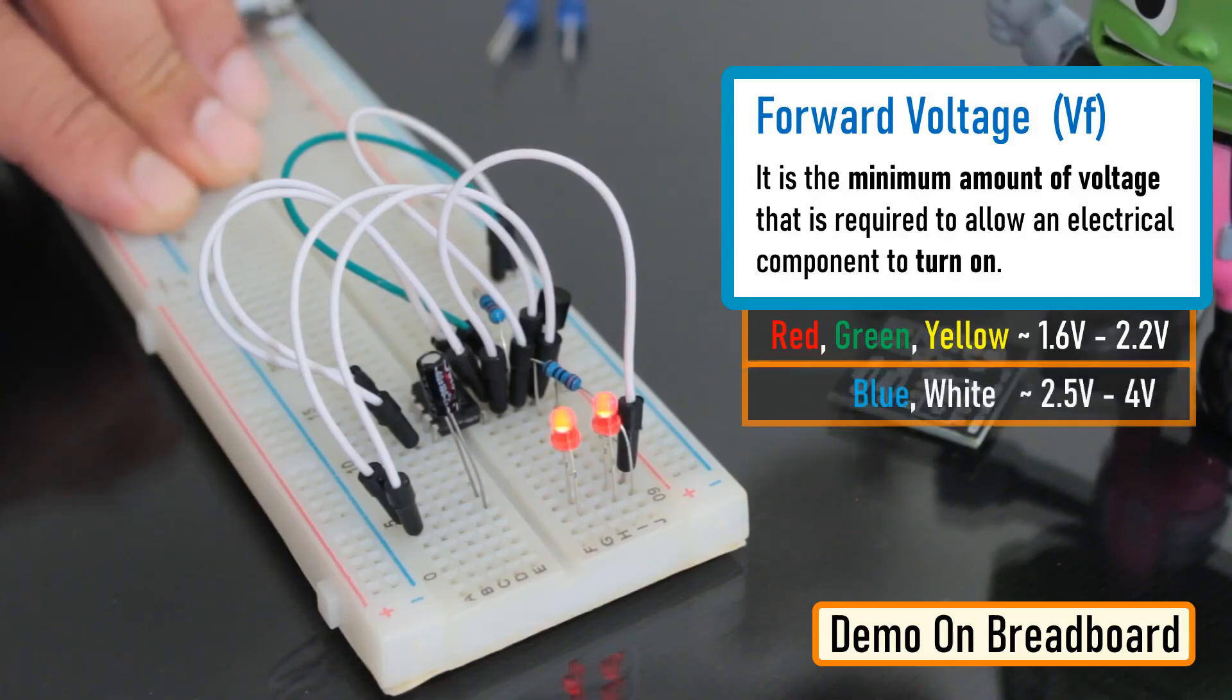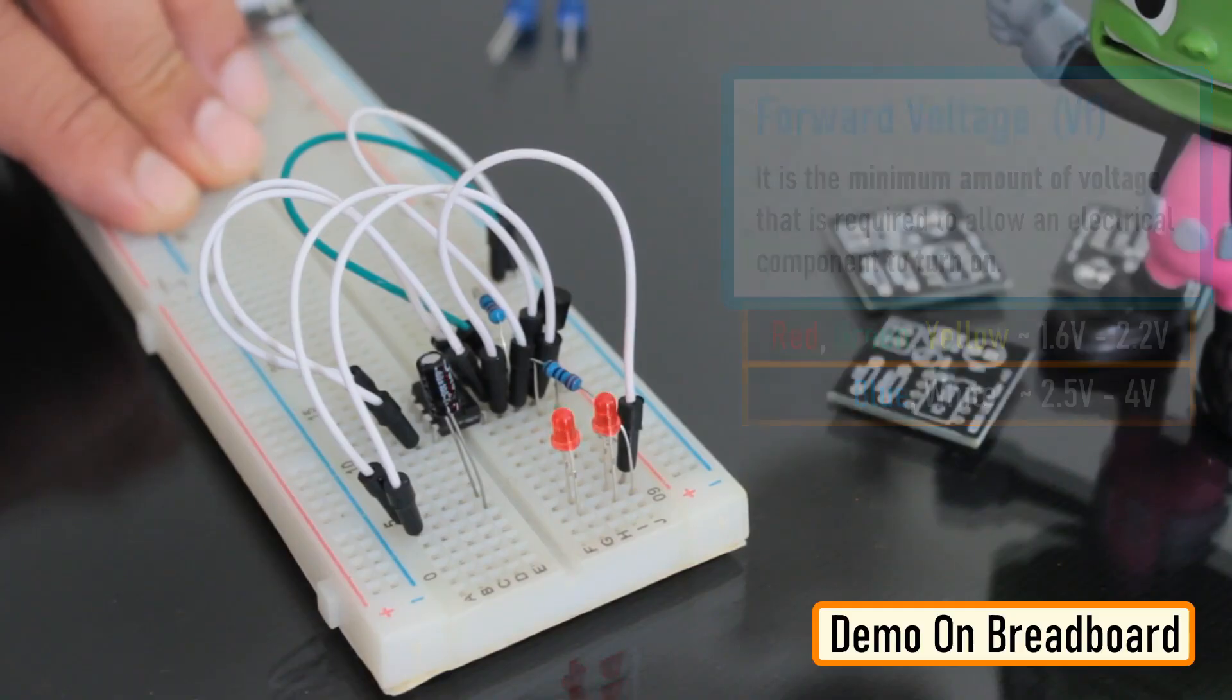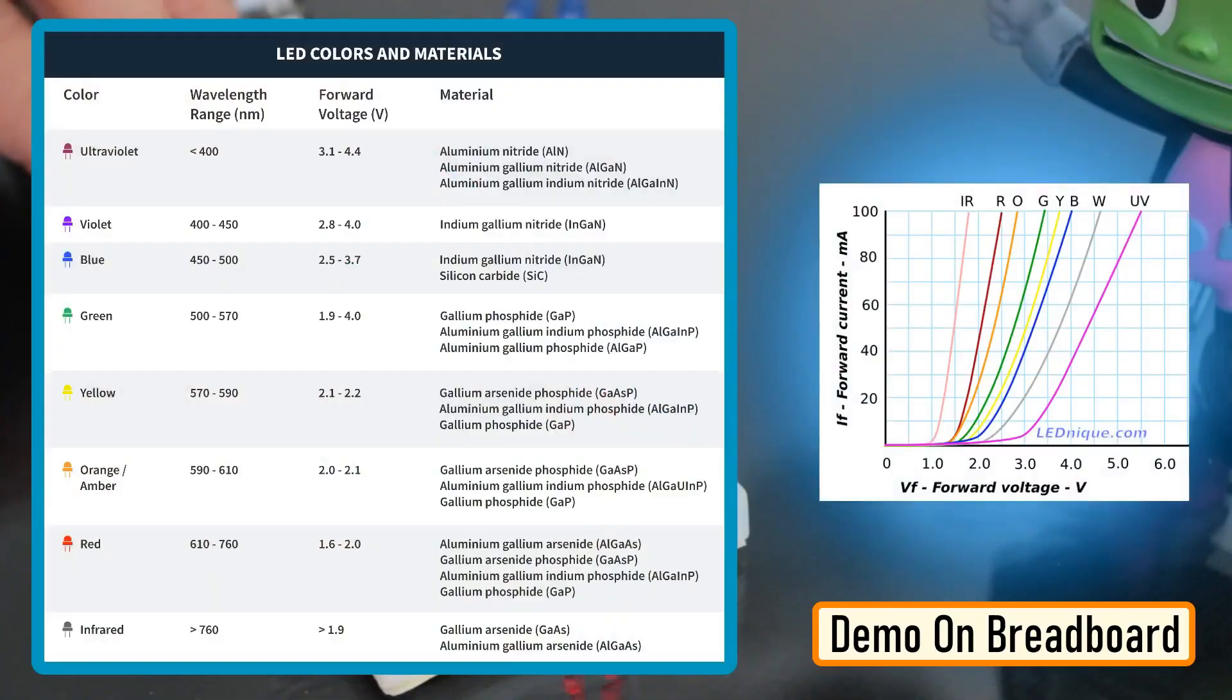However, blue and white LEDs start conducting from 2.5 to 4 volts and hence when the discharging capacitor voltage hits the threshold, the LED turns off faster than the other colors. I have provided a link of how the forward voltage works in the description below.